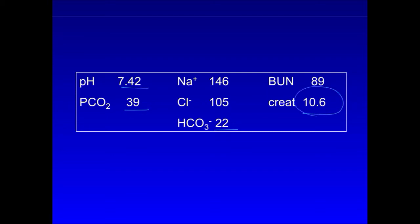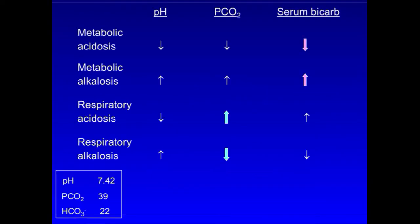We know that advanced renal failure is associated with a high anion gap metabolic acidosis. And in fact, the anion gap here is the sodium minus the sum of chloride plus bicarbonate, which is 19.